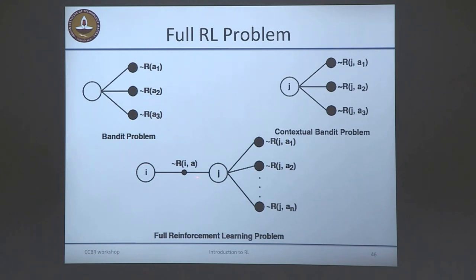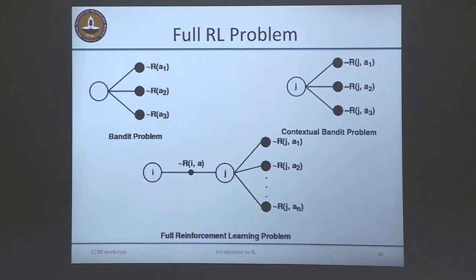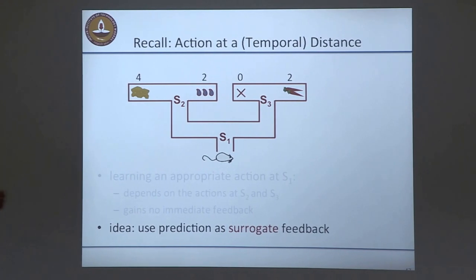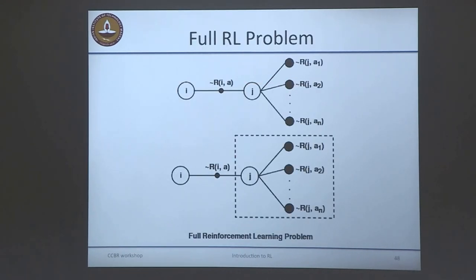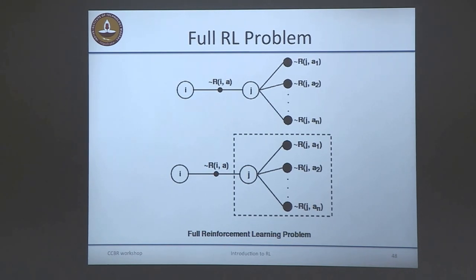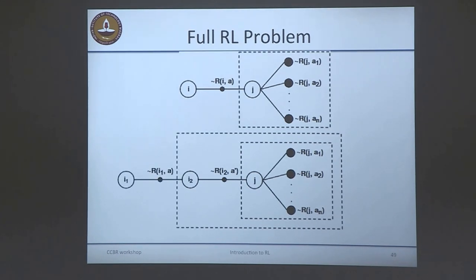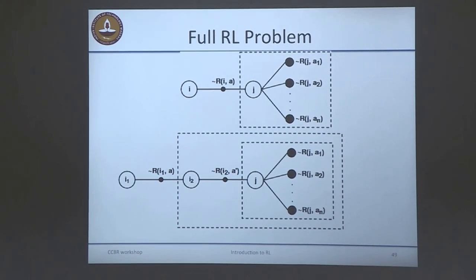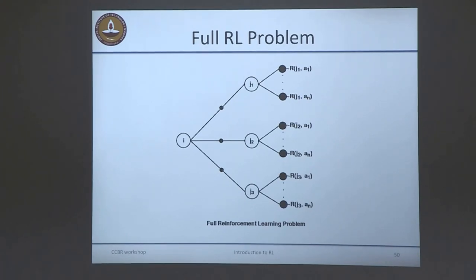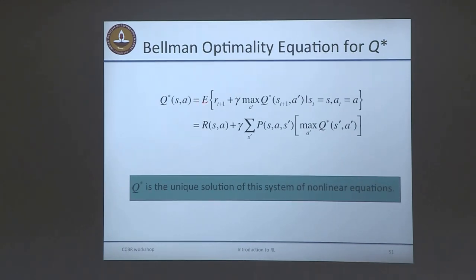From state J you have a contextual bandit problem. You use the prediction about the future as a surrogate for the reward. Whatever is in the dotted box is a bandit problem — solve it and pass the solution back to the previous state as the reward. You can keep doing this: solve the bandit, pass it back. One way: start from the last step, solve the problem backwards. But you'll have multiple possible outcomes when taking an action from I, so you need an expectation over all outcomes. Putting this together, you get an expectation over r_{t+1} plus the best you could do thereafter — this looks like a Bellman equation, but with a max: the Bellman optimality equation.